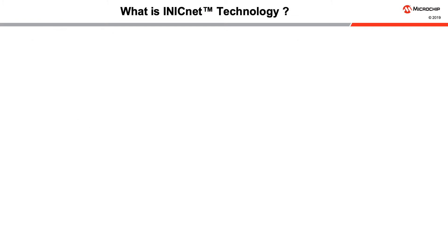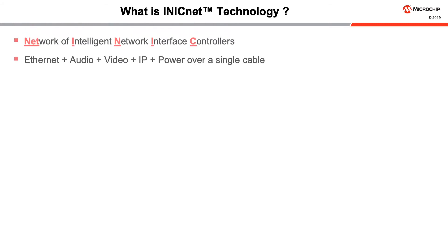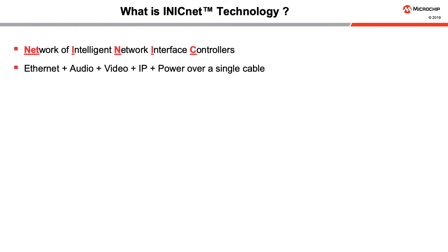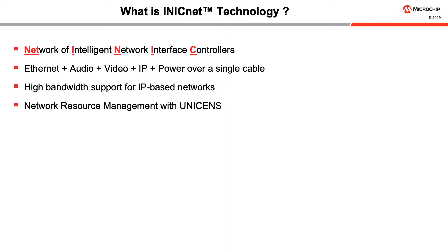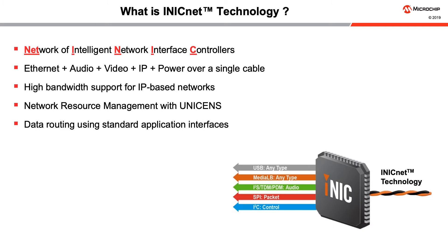So what is iNIC NET technology? iNIC NET is a single powerful network that simultaneously supports the transport of all infotainment system data types between ECUs. It is a network of intelligent network interface controllers that can transport audio, video, Ethernet, and IP as well as control and power over a single cable. In addition to efficient streaming of information that continuously flows, it supports high bandwidth IP-based networks. The network resources can easily be managed using simple commands or with Unisense, the unified centralized network stack. The iNICs route data using standard application interfaces such as I2S and I2C, among others. Network management is integrated, offloading the processor from having to manage real-time network operations.